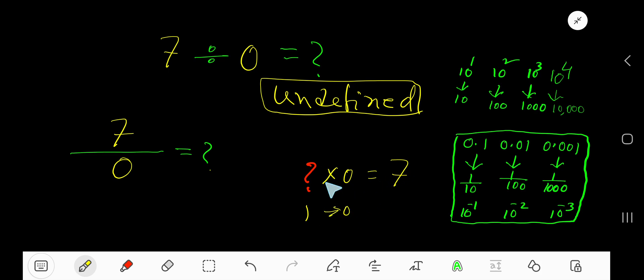0 is not 7, so this is not acceptable. Let's try 2. 2 times 0 also gives you 0. 0 is not 7. You will not get any number that, when multiplied by 0, will give you 7.